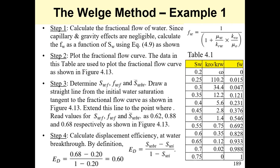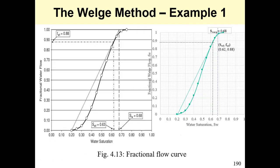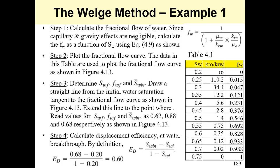Step one is to calculate the fractional flow of water. You will not typically be given the fractional flow, so you will need to use equation 4.9 to calculate it. All the required parameters are available. The next step is to plot the fractional flow of water as a function of water saturation, as shown in figure 4.13.